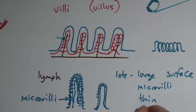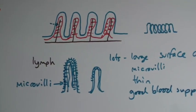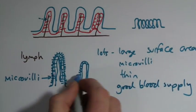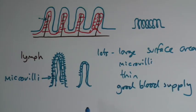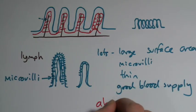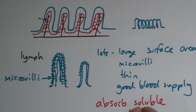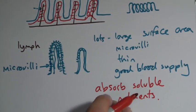And this good blood supply. Which means that the dissolved substances can pretty quickly get into the blood and be carried away in the body. Try and avoid using terms like goodness and badness to get all the goodness out of the food. It doesn't mean anything. You're trying to absorb soluble nutrients. Now, I keep going off the screen today, sorry.